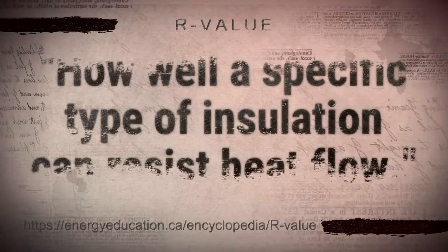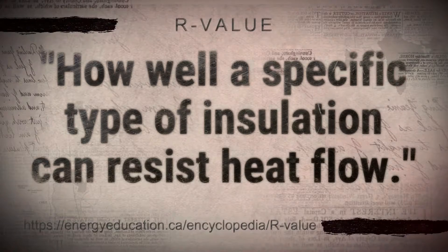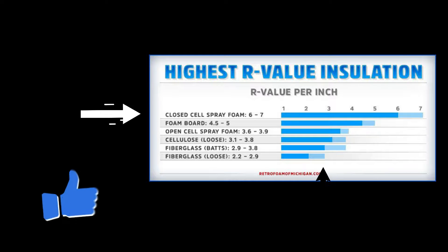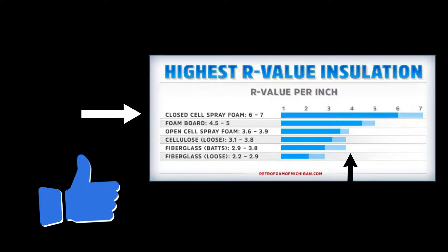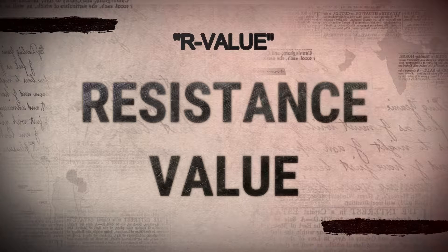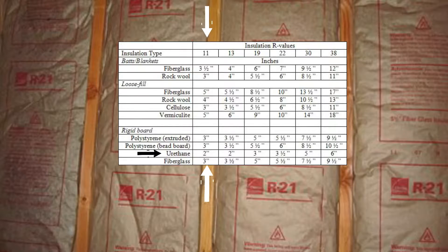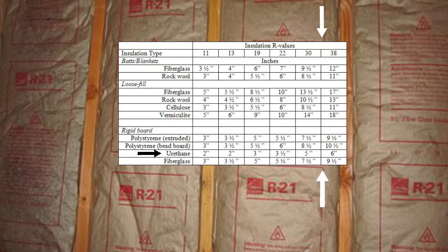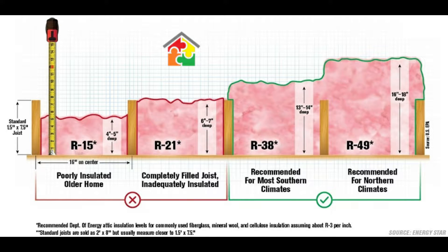The R-value of insulation is a value used to measure how well a specific type of insulation can resist heat flow. The higher the R-value, the more effective the material is at preventing heat transfer. R-value is short for resistance value. Different insulating materials have their own unique R-value per unit length. The thicker the material, the more it resists heat transfer, so values are listed per inch.